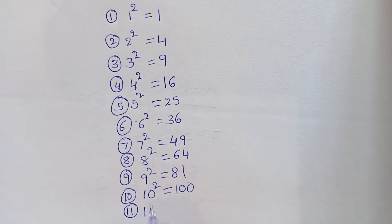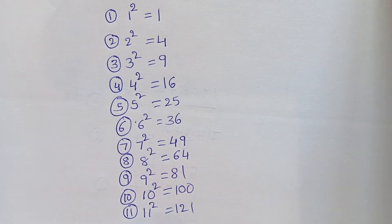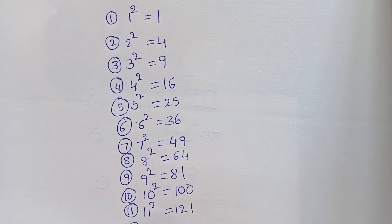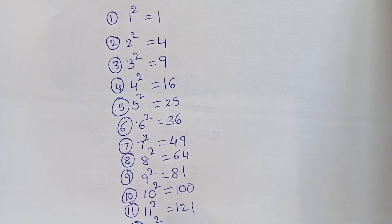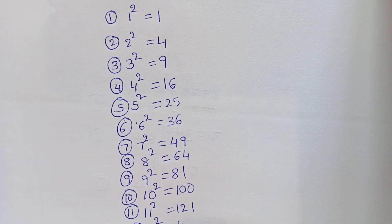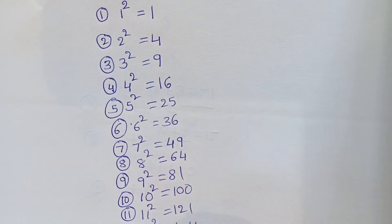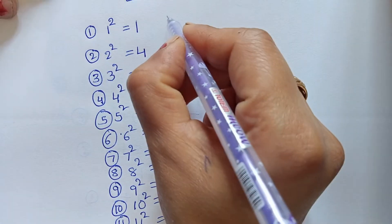Eleven square equals to one twenty-one. Twelve square equals to one forty-four. Come, let's explain this.